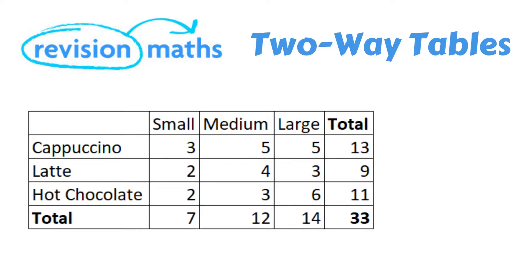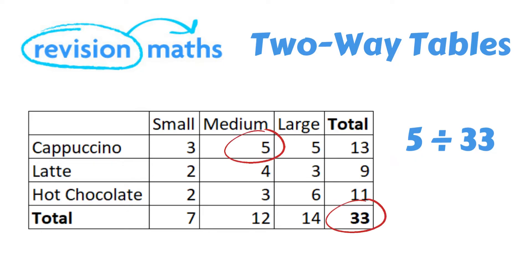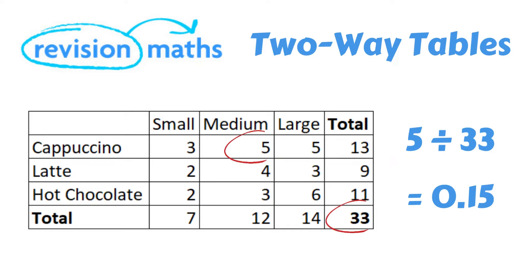From the table on the screen, we can see that there are a total of 33 hot drinks sold. A typical exam question you may face will ask you to complete the table with certain variables missing. You may also be asked to work out the probability of a particular order. For example, what would be the probability of a medium cappuccino being ordered? To work this out, you simply take the total number of medium cappuccinos and divide this by the total number of orders. So in this example, it would be 5 divided by 33, so 0.15 would be your answer to two decimal places.